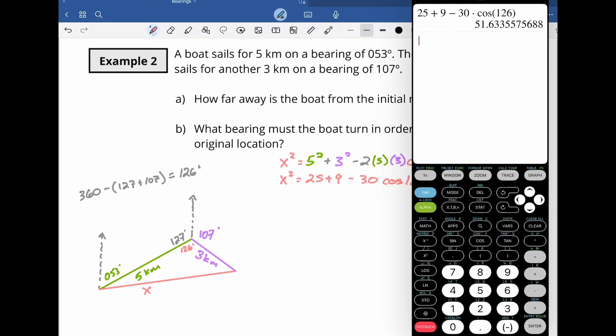And when I hit enter there, that's going to give me that x squared is equal to 51.633 dot dot dot. And when I take the square root of that, I'm going to take the second square root or x square.